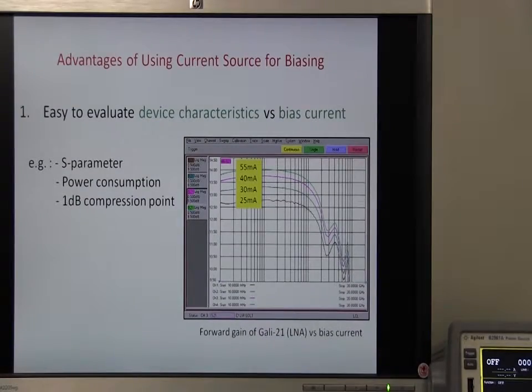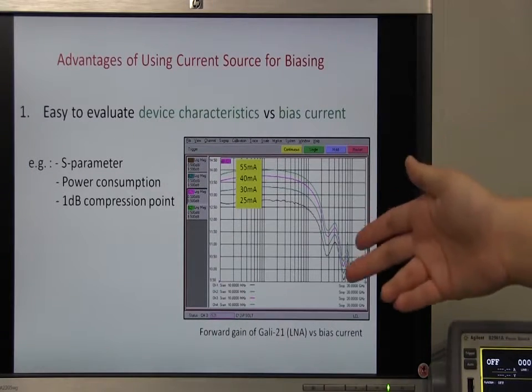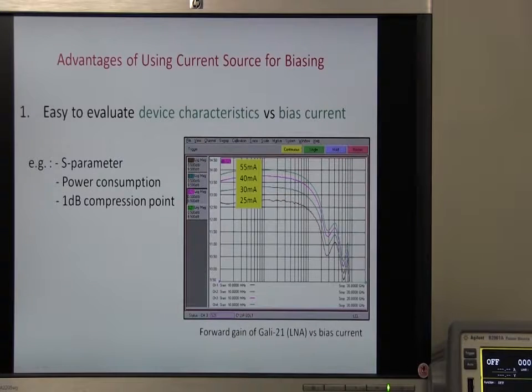There are many advantages of directly using a current source for biasing. First, you can easily evaluate the device characteristics under different bias current values. For example, you can sweep the bias current values and evaluate the gain or maybe the power consumption of your device.